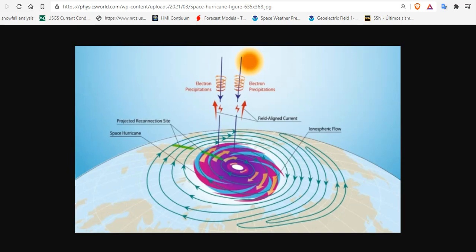The space hurricane analyzed by the team in Earth's ionosphere was spinning in an anti-clockwise direction, had multiple spiral arms, and lasted almost eight hours before gradually breaking down.